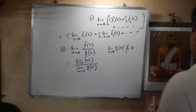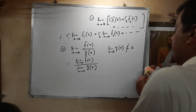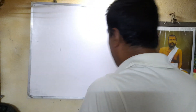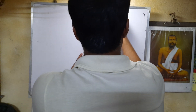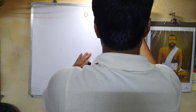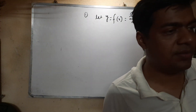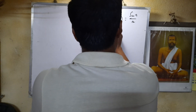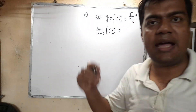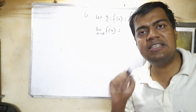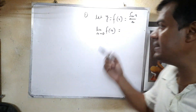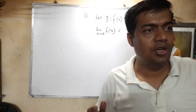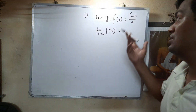Now there are some basic formulas relating to limits. First, let y = f(x) = sin(x)/x. We need to evaluate limit x tending to 0 of f(x). If we directly put x = 0, it gives sin(0)/0, which is of the 0/0 indeterminate form. So we cannot directly substitute x = 0.